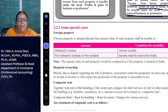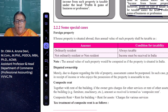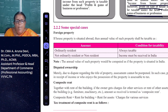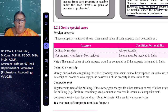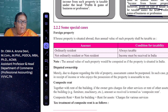Welcome to CMA Tamil Channel. In the last video, we saw three conditions for income from house property. First condition: there must be a property which consists of a building or land. Second condition: the assessee must be the owner — legal owner, beneficial owner, or deemed to be the owner. Third condition: the property should not be used for his business or profession.